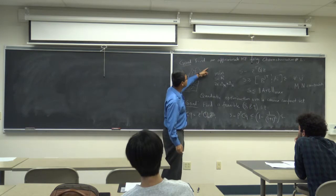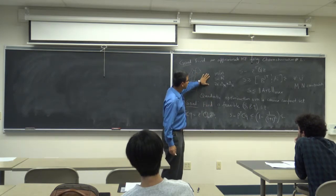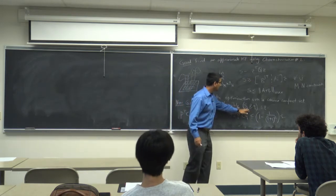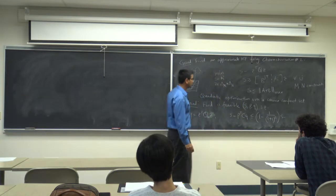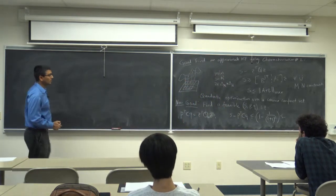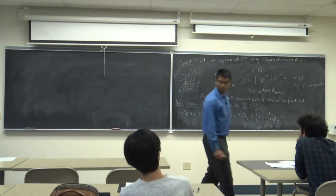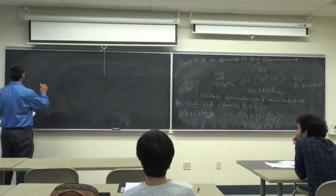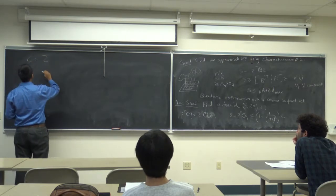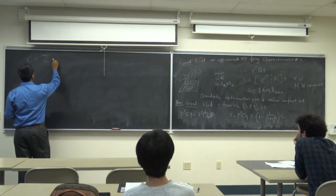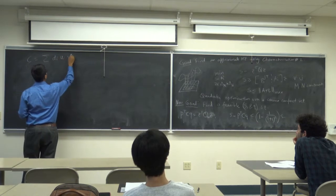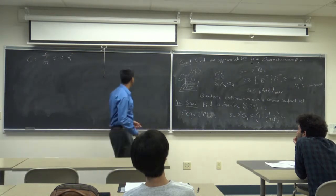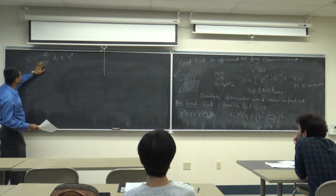We want to find an approximate Nash equilibrium. An exact Nash equilibrium solves the original problem, but we want to find an approximate one by relaxing the condition. All we want is to find a feasible tuple S, P, Q such that this relaxed constraint is satisfied. Now, C equals A plus B can be written via singular value decomposition as a sum: C equals sum over i from 1 to K of d_i U_i V_i transpose, where C is of rank K.